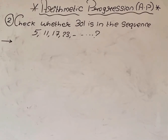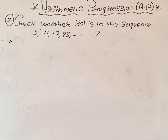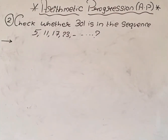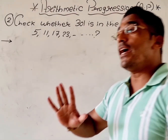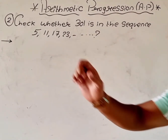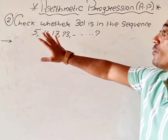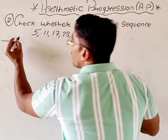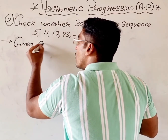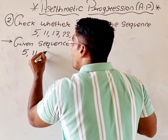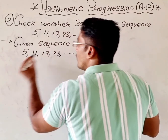Now let's see question number 2: check whether 301 is in the sequence. This sum is a little bit similar to the first question. In the first question the AP was given and we had to find out which term is 560 — meaning we knew 560 is in that AP. In the second question we have to check. So first we will check whether the sequence is an AP. The given sequence is 5, 11, 17, 23, and so on.